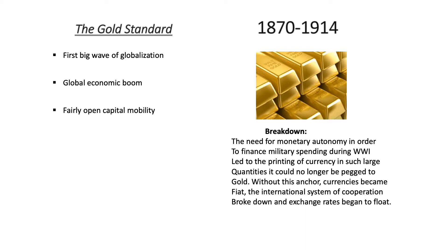During this period there was fairly open capital mobility to facilitate trade in goods, services, and capital. We were dealing with pure commodity currencies — every country participating in the gold standard would tie the value of its currency to gold and had to hold adequate gold in its treasury to credibly back that peg. So accepting a bill was as good as gold.